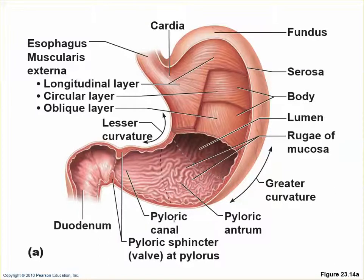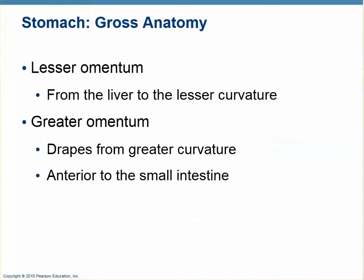The outer side of the stomach — to the left — is called the greater curvature, and the right side is the lesser curvature. The stomach is suspended by mesenteries with a specific name. These mesenteries have quite a bit of fat in them, so they're called omentum.